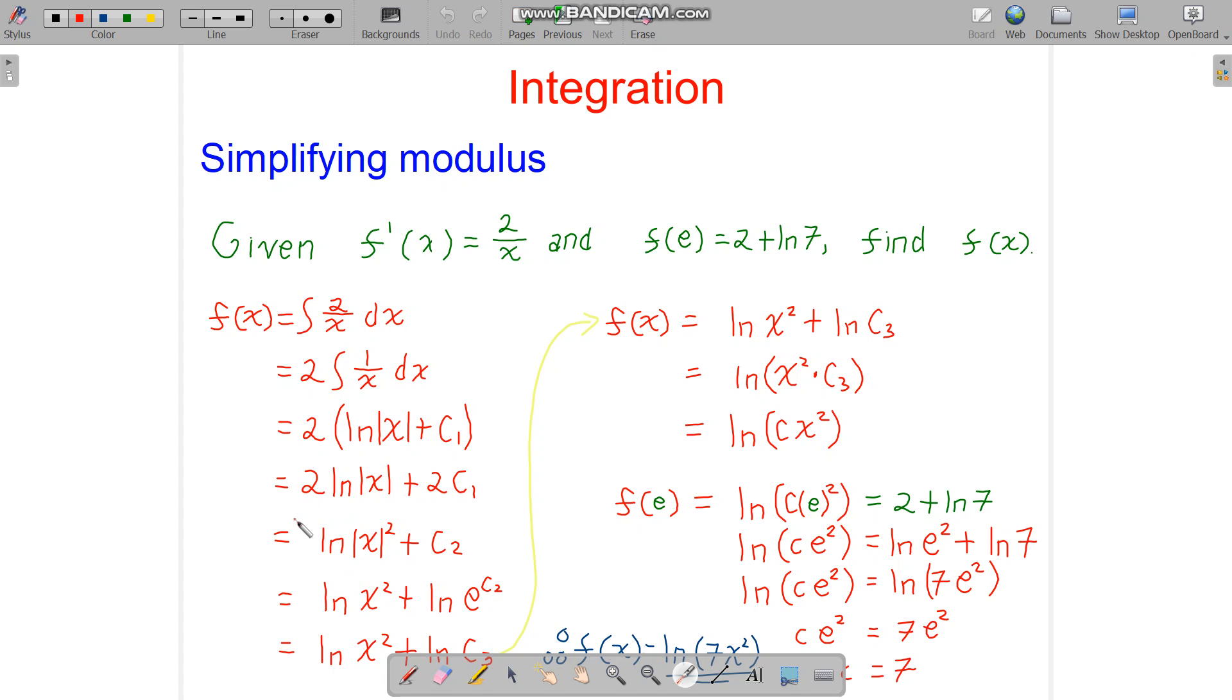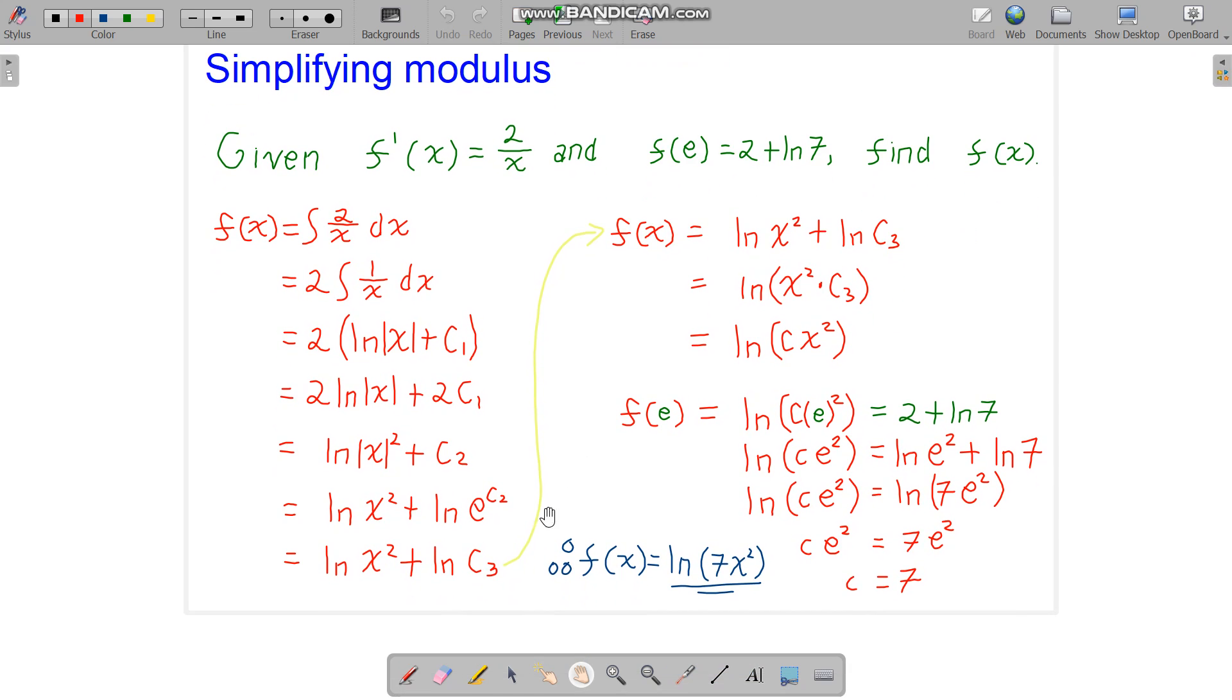And here, using the laws of logarithm, we can move this 2 inside the argument, the power rule. So the absolute value of x here is squared. And remember, if it is squared, we don't need the absolute value, because of course it is always positive. It is something squared.